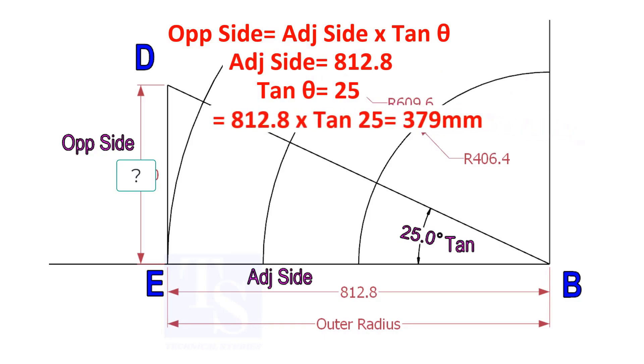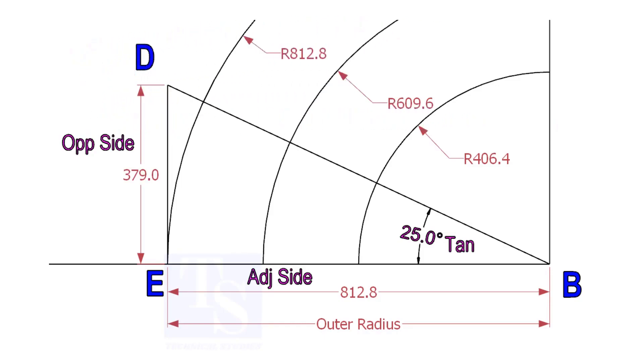812.8 into tan 25 equals 379 millimeters. Draw the line ED vertically and the slant line DB. I hope now you will be able to draw a line in any degree.